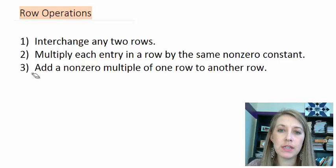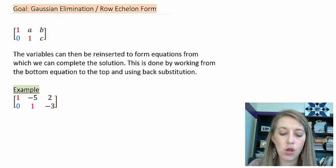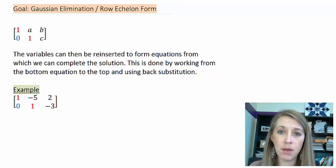Let's actually take these row operations and let's actually utilize them in an example. But before we start the full-fledged example, let's talk about what our goal is at this step. Our goal at this time is what's called either Gaussian elimination or row echelon form.